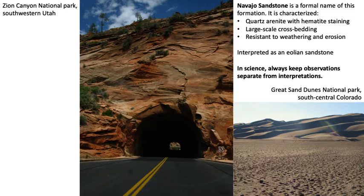The Navajo Sandstone is a formal unit — a quartz arenite with hematite staining that gives it its red color. It has large-scale crossbedding, is resistant to weathering and erosion, and is interpreted as aeolian. In science, we always try to keep description and interpretation separate.